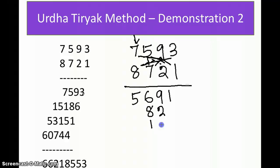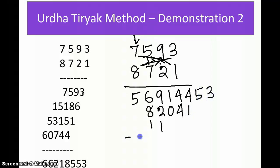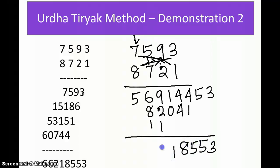Next, taking three numbers from 5, 9, 3 and 7, 2, 1: 5 × 1 is 5, plus 7 × 3 is 21, plus 9 × 2 is 18, giving 44. Next, two numbers: 9 × 1 is 9 plus 3 × 2 is 6, giving 15. Then 3 × 1 is 3. Adding all with carry-forwards gives the answer 66,218,553.